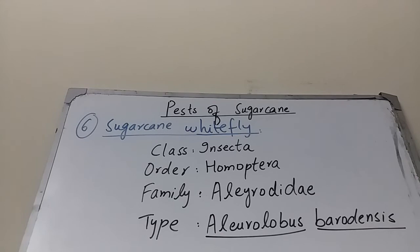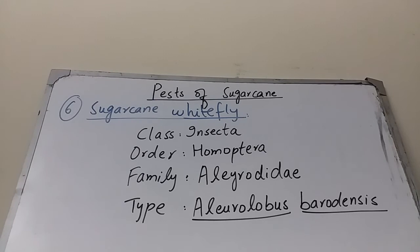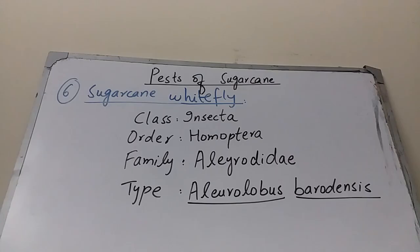The sixth pest is the Sugarcane Whitefly. Systematic position: Order Homoptera, Family Aleyrodidae, scientific name Aleurolobus barodensis. These are very active and fragile insects. Main damage is caused by nymphs sucking the cell sap of leaves, causing leaves to remain unopened and reducing the sucrose content of the crop.